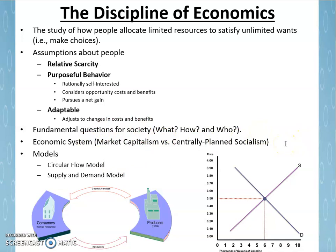This is important because we're studying labor economics, which is a subset of the discipline of economics, and we could study it in the context of a market capitalist or centrally planned system. In a centrally planned system, if you want to know how wages are determined or what industries get more labor, you just look at what the leadership wants. Whereas in the market capitalist system, we develop models such as supply and demand for labor to understand how wages change and why some occupations are more attractive than others.